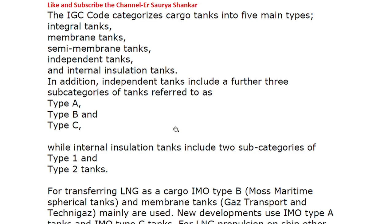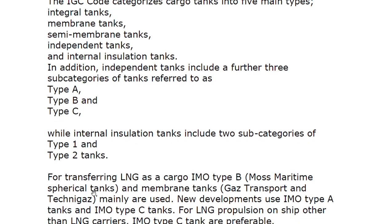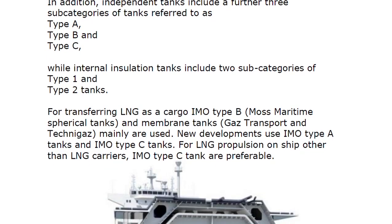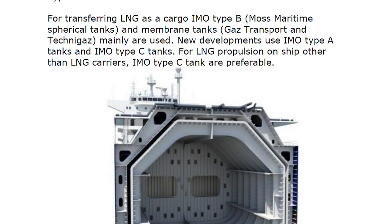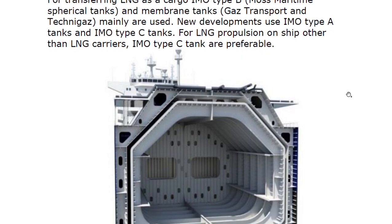The independent tank has three further categories: Type A, Type B, and Type C. The internal insulation tank includes two subtypes: Type 1 and Type 2. For transferring LNG as cargo, IMO Type B - which is the Moss Maritime spherical tank - and membrane tank systems are mainly used. New developments use IMO Type A and Type C tanks. For LNG propulsion on ships other than LNG carriers, IMO Type C tanks are preferable.